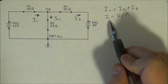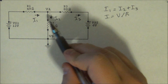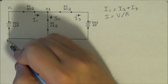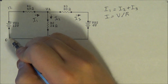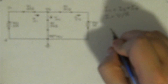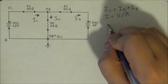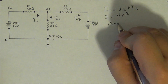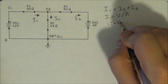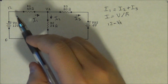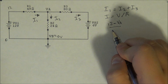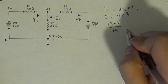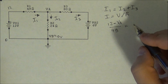You know that I is equal to V over R, so you start by analyzing each current. I1 is equal to — here we have 12 volts, since we're going from 0 to 12 — so I1 is equal to 12 minus VA, since it's going this way, divided by the resistance, which is 49 ohms.